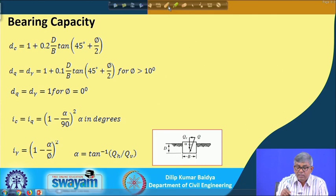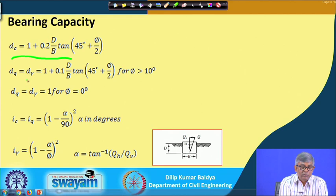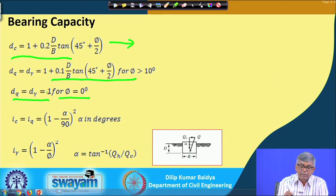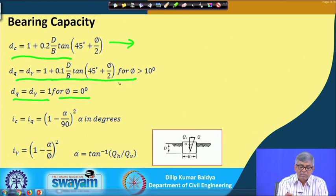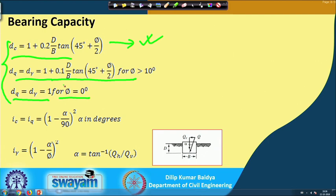For depth factors, dc = 1 + 0.2(D/B)tan²(45° + φ/2), which is a universal equation with no phi limit. For dq and dγ: when φ > 10°, dq = dγ = 1 + 0.1(D/B)tan²(45° + φ/2); when φ = 0°, dq = dγ = 1. For phi values between 0 and 10 degrees, intermediate values can be used by interpolation.